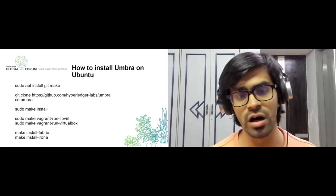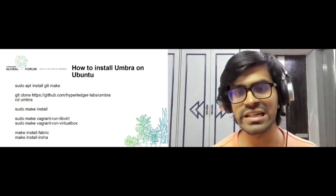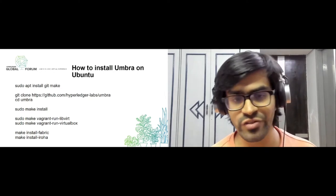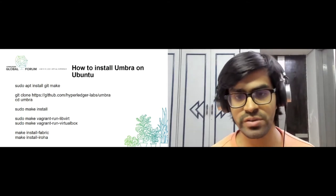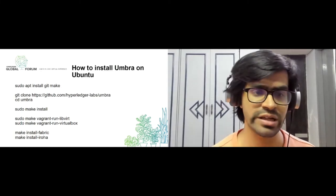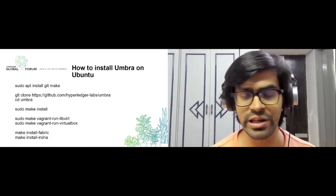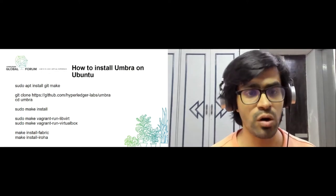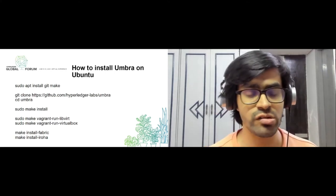Because we are using Python, all necessary Python files are provided within the git repository at github.com/hyperledger-labs/umbra. When you do git clone, it will automatically install all the different Python packages already mentioned in the README and requirements.txt file. Then you run sudo make install, and you'll also install Vagrant with a VirtualBox or libvirt virtual machine.